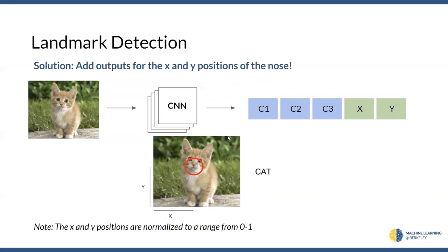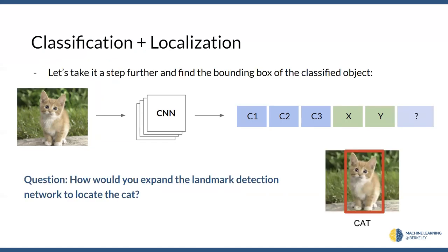In order to do this we need to add some output to the network. One potential solution is: we have those classification outputs, but now we also add an x and y output — just two additional outputs from the network. These x and y values are essentially the x and y coordinates of the nose on the image. It's not necessarily in pixels — it could be a normalized value, so maybe zero is the far left of the image and one is the far right. The network can output that normalized value. We can collect training data by pairing specific points with images and doing training based on that.